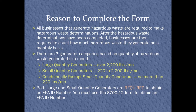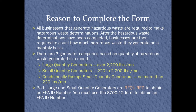All businesses that generate hazardous waste are required to make hazardous waste determinations and track how much hazardous waste they generate on a monthly basis. Both large quantity generators (LQGs) and small quantity generators (SQGs) are required to obtain an EPA ID number by completing the 8700-12 form.